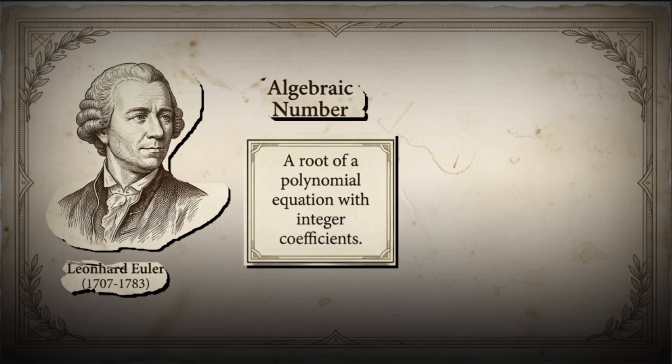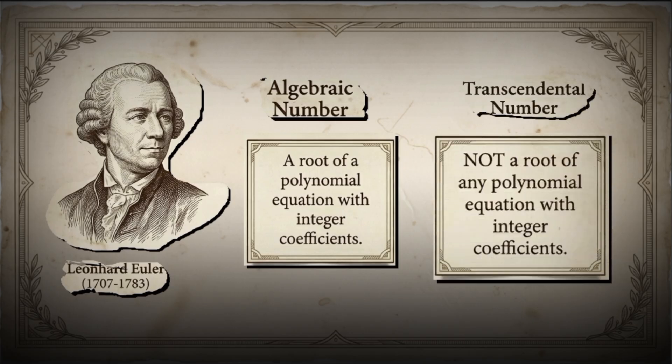An algebraic number is a number that can be a root of a polynomial equation with integer coefficients. And a transcendental number? That is, of course, a number that is not a root of any polynomial equation with integer coefficients.